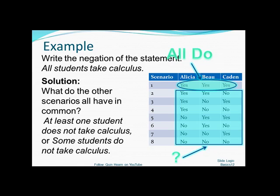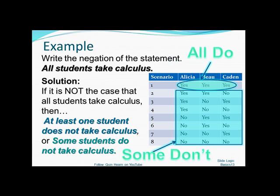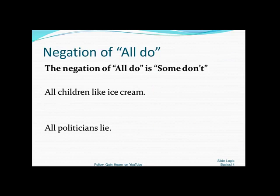So in logic, some and at least one mean the same thing. So in general, the negation of all do is some don't. So how would you negate all children like ice cream? You would say, I think that there's at least one child out there that doesn't like ice cream. So some children do not like ice cream.